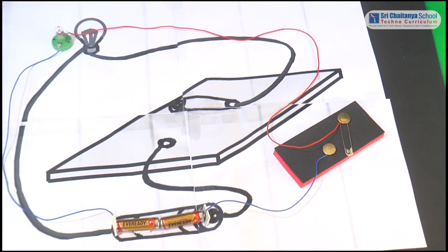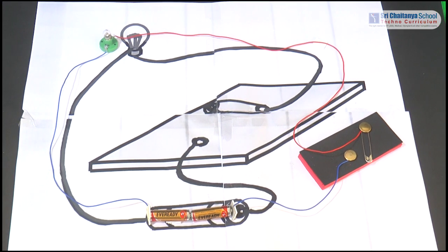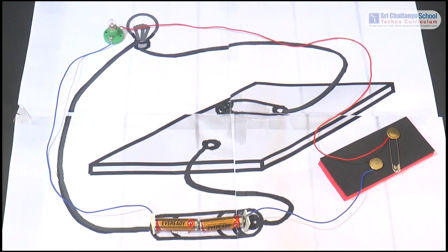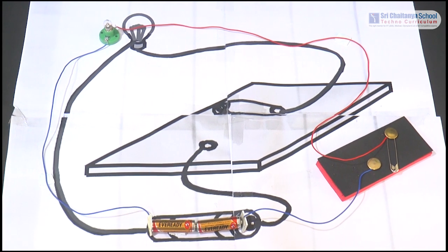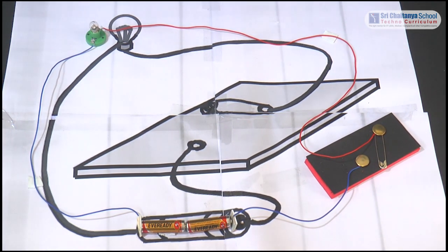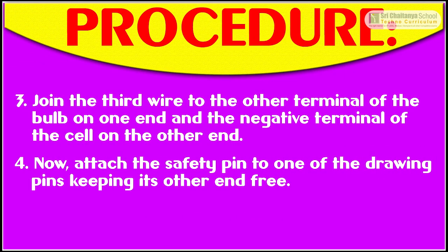Attach one piece of copper wire to each of these pins. To one end of a copper wire, connect the bulb. To the end of the other copper wire, join the positive terminal of the cell. Join the third wire to the other terminal of the bulb on one end and the negative terminal of the cell on the other end.